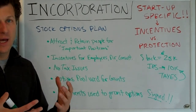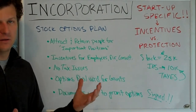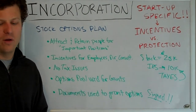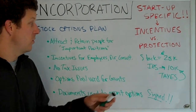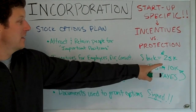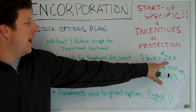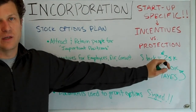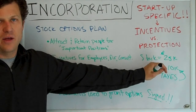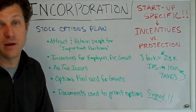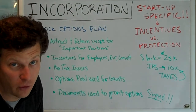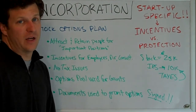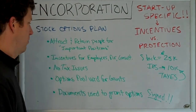You actually have to pay — that is, exercise — the option to turn it into stock. So if you give someone the exact same number of options that $25,000 worth of stock represents, they would have no immediate tax liability. It's a way to defer tax liability for your employees.